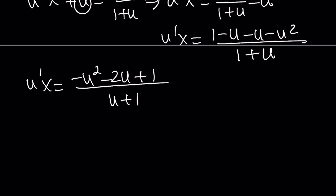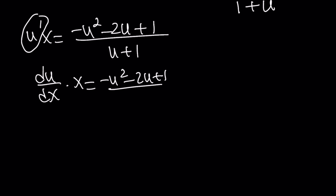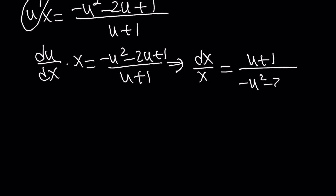Now at this point I'd like to separate the variables. Let's write u prime as du/dx. So we get du/dx multiplied by x equals (negative u² minus 2u plus 1) over (u plus 1). From here we can get: dx/x equals (u plus 1) divided by (negative u² minus 2u plus 1) du.